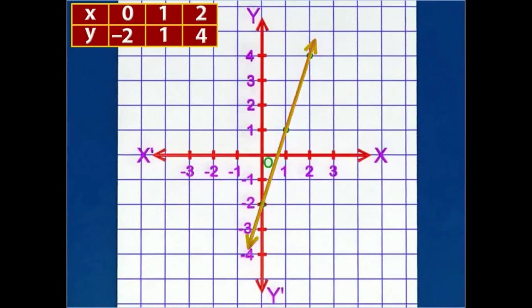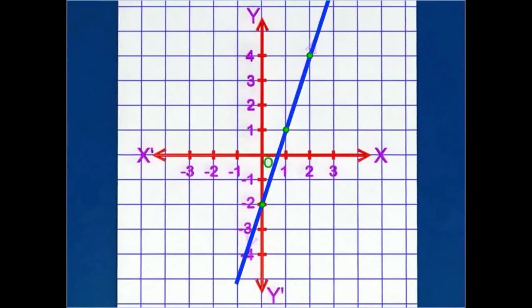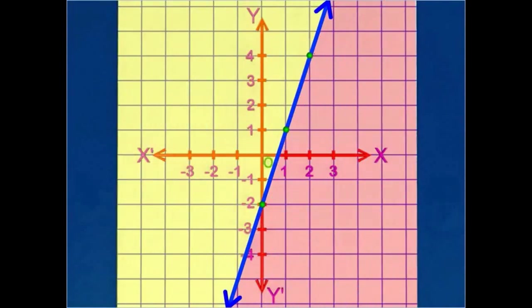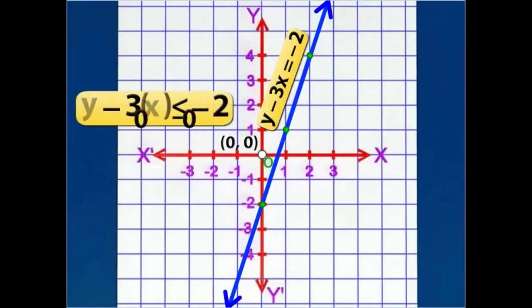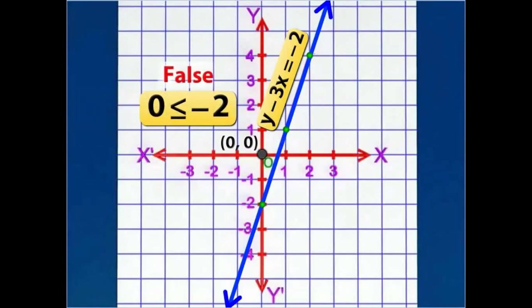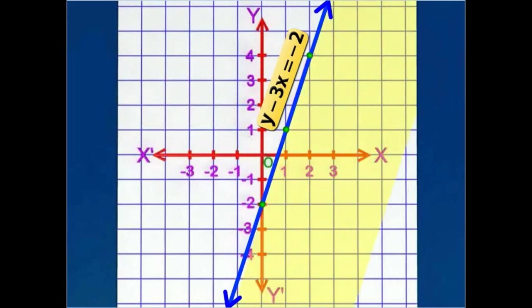Mark the three obtained points on the graph and draw a line joining the points. The line represents the graph of the equation that divides the plane into two regions. Now select any one point in one of the regions and substitute its x and y coordinates in the given inequation. If the point satisfies the inequation, shade that region; otherwise, shade the opposite region. The shaded region represents the given inequation.